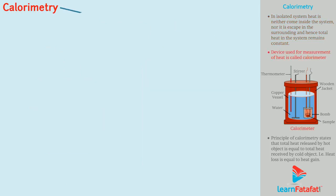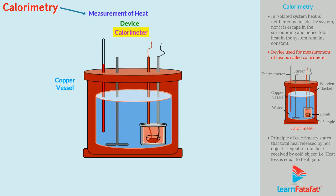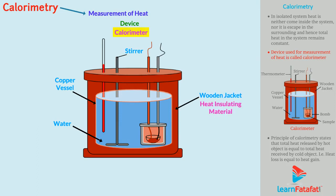In general, calorimetry means measurement of heat. A device used for this purpose is called a calorimeter. A typical calorimeter is shown in the figure. It is generally made of a copper vessel containing water and a stirrer of the same material. The whole assembly is kept in a wooden jacket containing heat insulating material such as glass wool. The outer layer acts as a heat shield that does not allow heat to come inside the box, and hence it provides thermal isolation from the surrounding.